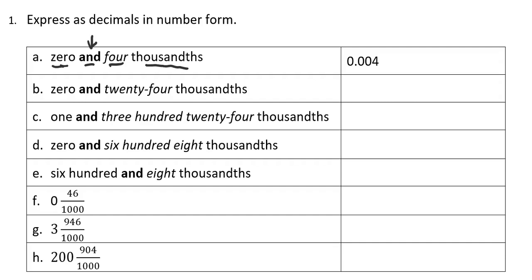After my decimal point, I know that I have to have a four that lands in the thousandths place. So if I look at my answer, you can see that the zero is in the ones place, the decimal point is where the word 'and' was, and my four has landed in the thousandths place — tenths, hundredths, thousandths. So we would read this as zero and four thousandths.